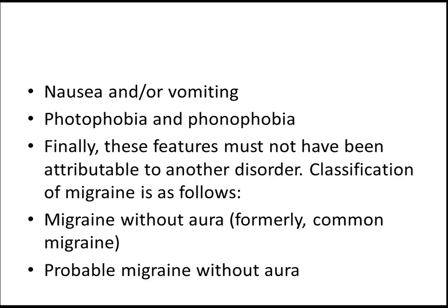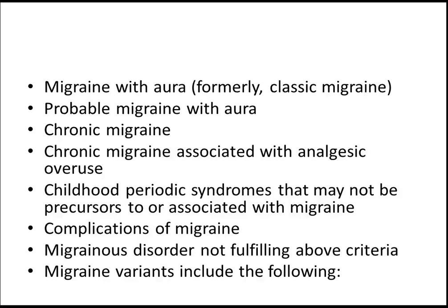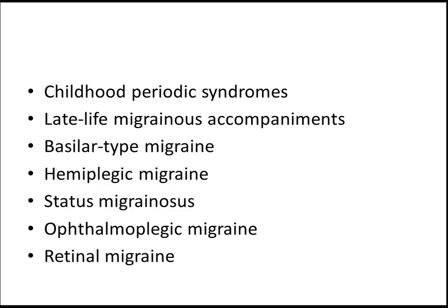The classification of migraine includes: migraine without aura (formerly known as common migraine), probable migraine without aura, migraine with aura (classic migraine), probable migraine with aura, chronic migraine, chronic migraine associated with analgesic overuse, and childhood periodic syndromes. There are also complications of migraine and migraine variants. You don't need to memorize all of these in detail for the USMLE examination.